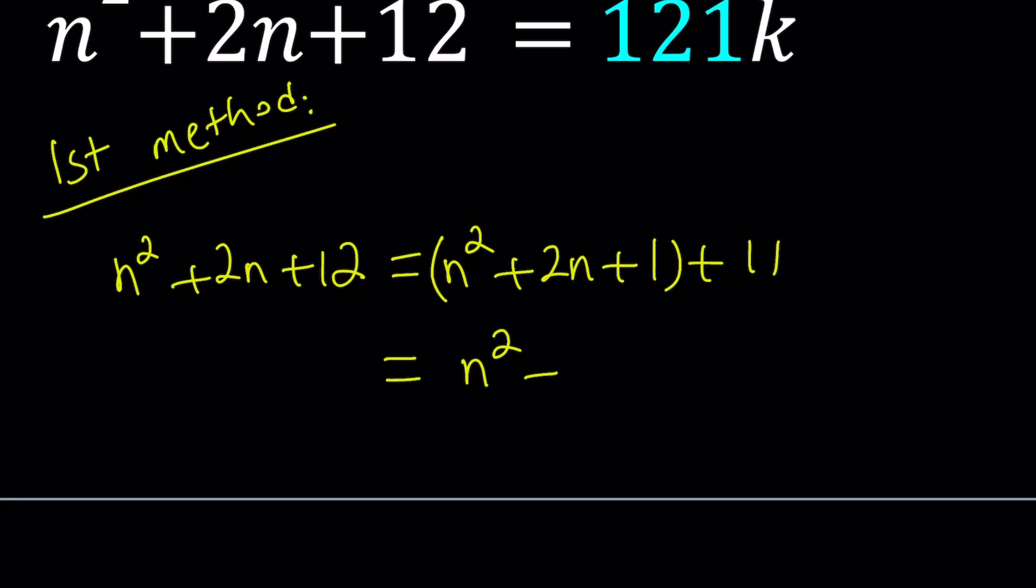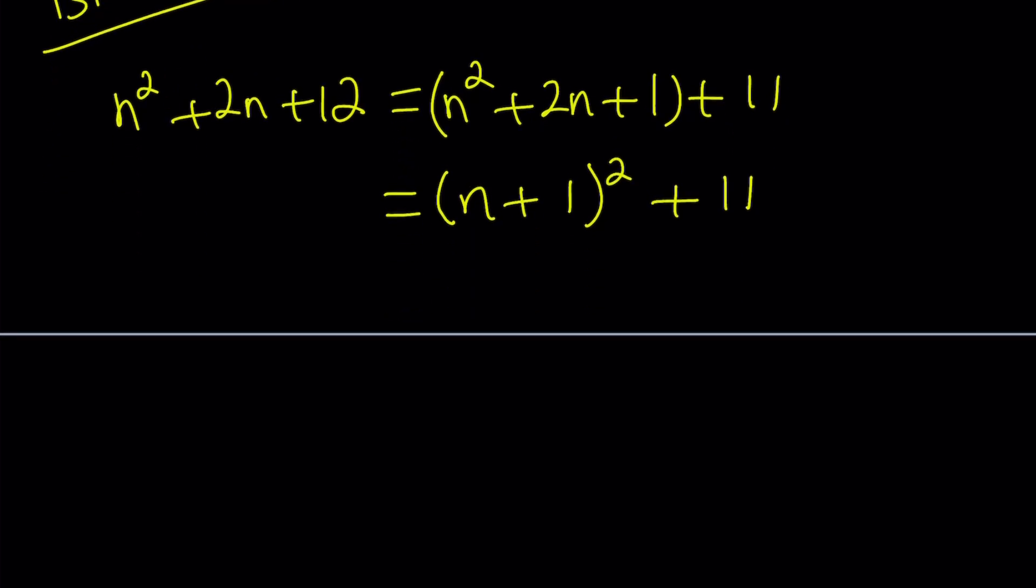So I can write this as n squared plus 2n plus 1 plus 11 and this part is a perfect square. We used this idea to complete the square for solving quadratic equations. We were able to write our expression in this form and now we're going to set it equal to 121k.